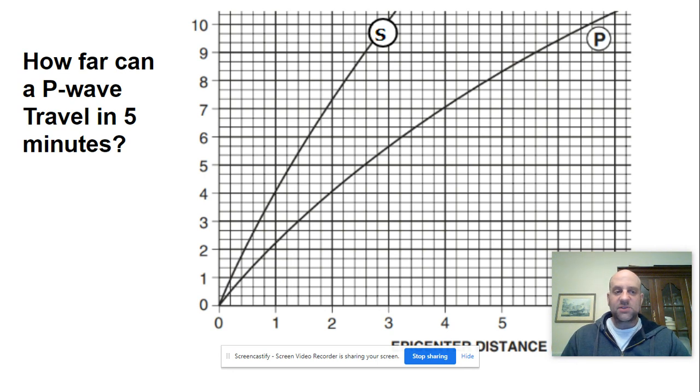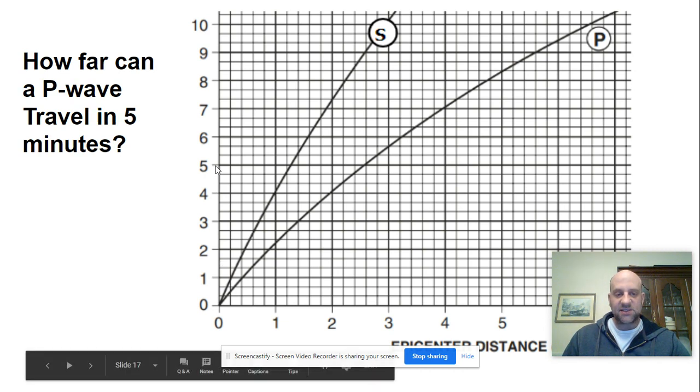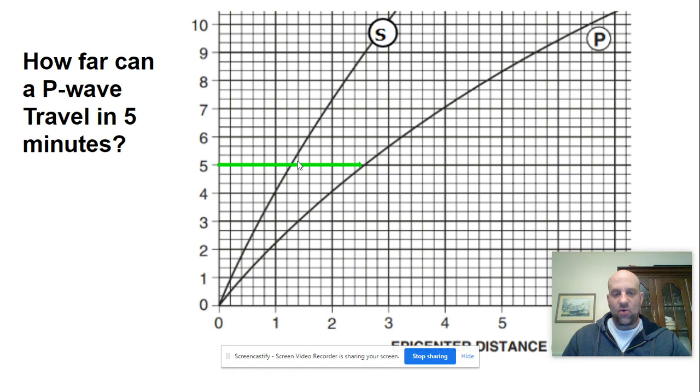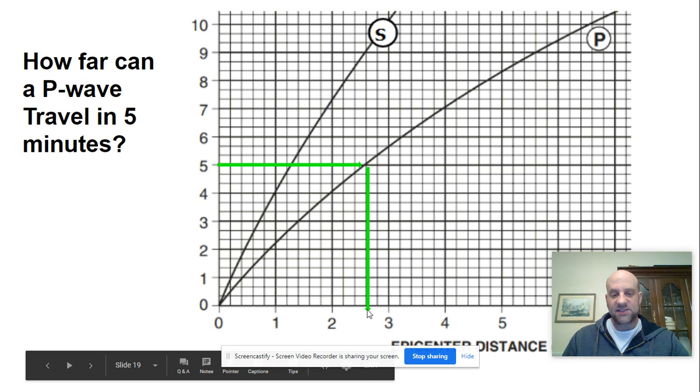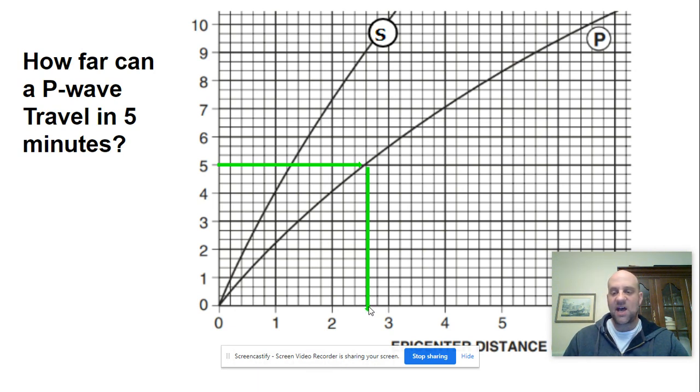Now we're going to go in reverse. We want to know how far can a P-wave travel in 5 minutes. To do this, we have to start on the y-axis, go up to 5 minutes, and then we're going to draw a line over to our P-wave and then go down to our x-axis. We would see that this is 2000, 2200, 2400, this would be 2600 kilometers. That's how far a P-wave could travel in 5 minutes.